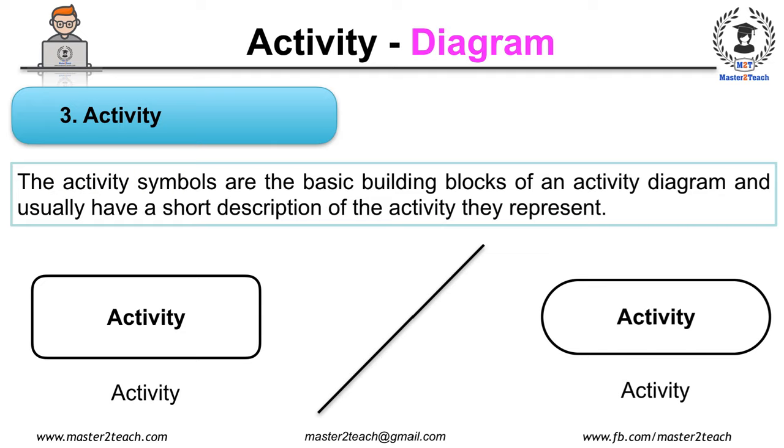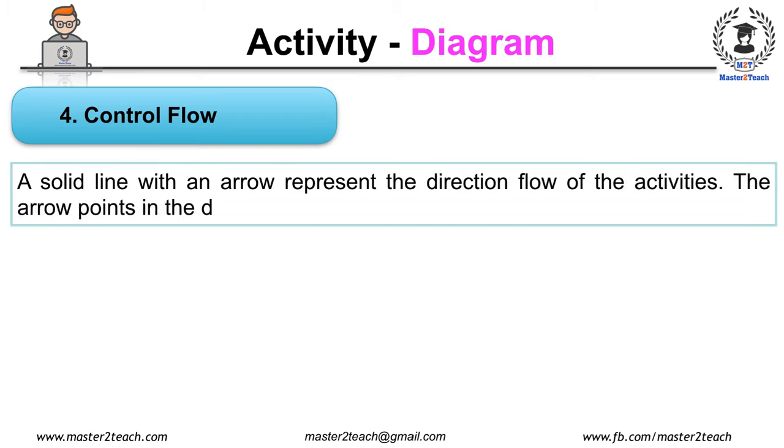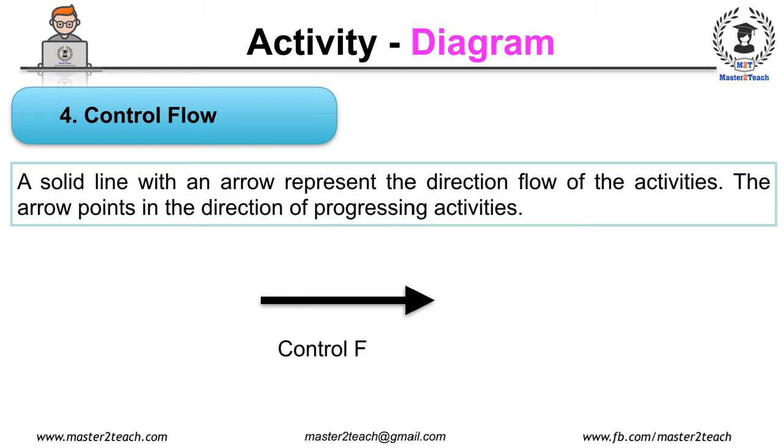Control Flow: a solid line with an arrow represents the direction flow of activities. The arrow points in the direction of progressing activities.